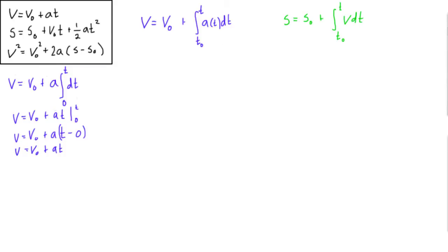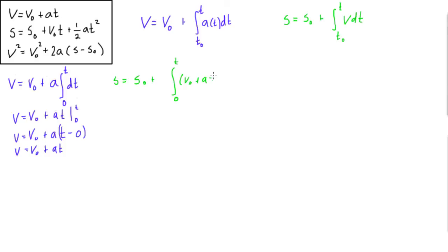Let's move on to the second. We'll switch to green because we're going to use the green equation now. We'll write it right beside it, starting again with S equals S₀ plus the integral, setting T₀ equal to 0 to T. For V inside the integral, we already derived V equals V₀ plus aT, so we substitute that in: V₀ plus aT, dt.